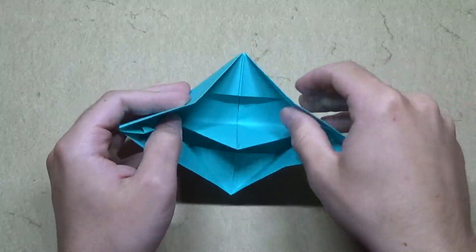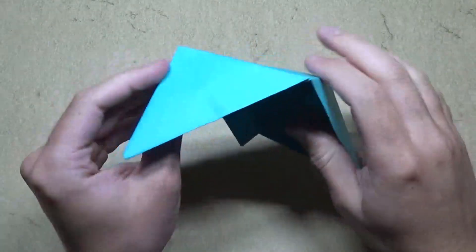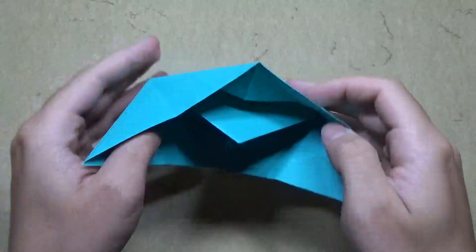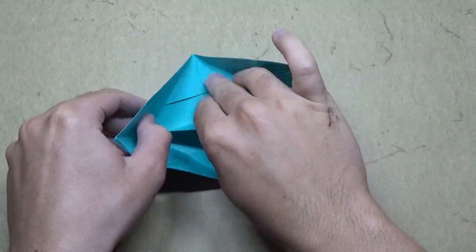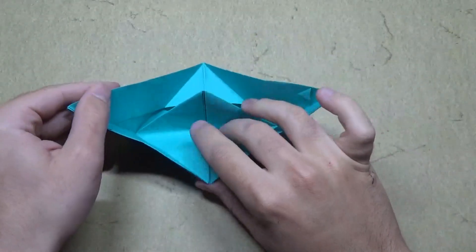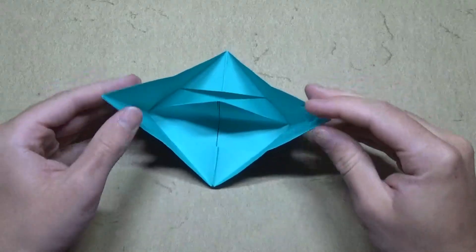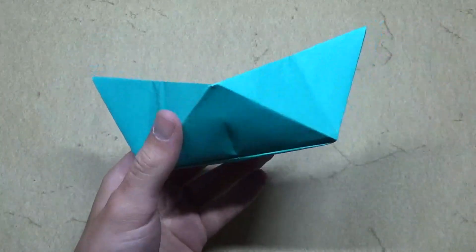Shape it to taste into a boat. Oh, and ignore the slight crease that you see here, that was a mistake fold I did. So you just want to shape it until you get a boat.